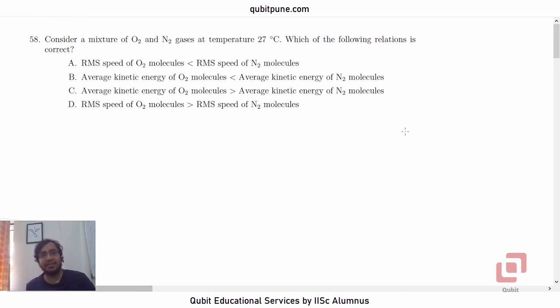This is based on the kinetic theory of gases. It is a very simple MCQ. Consider a mixture of oxygen and nitrogen gases, O2 and N2, at temperature 27 degrees Celsius. Which of the following relations is correct?